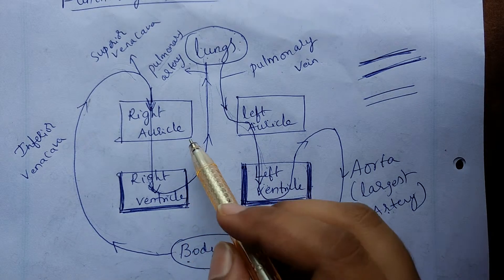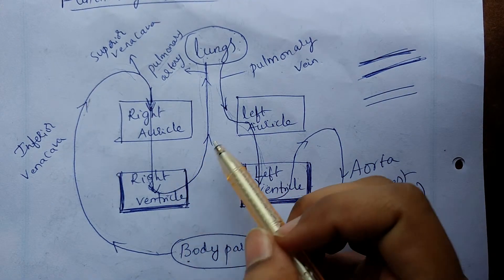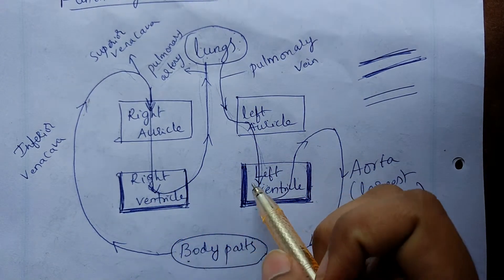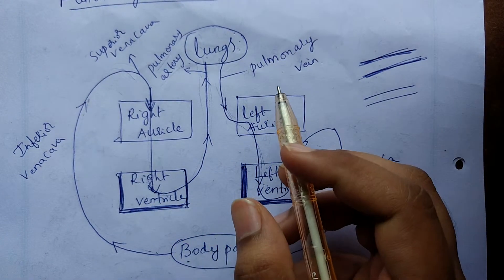The chambers are: right auricle, left auricle, right ventricle, and left ventricle.